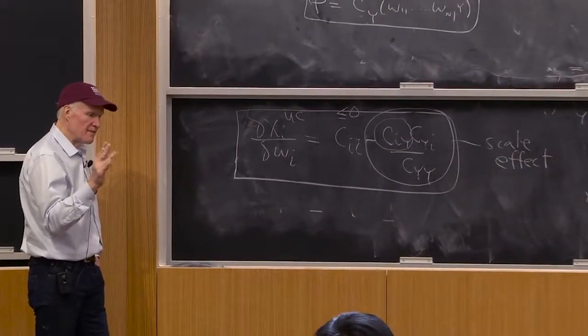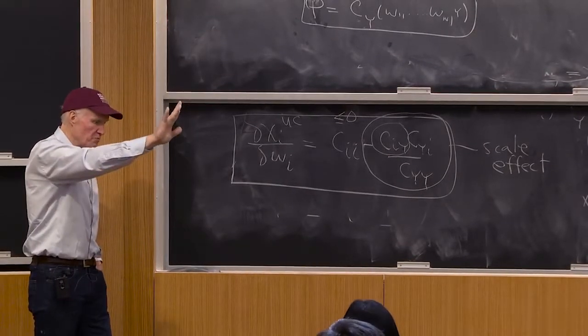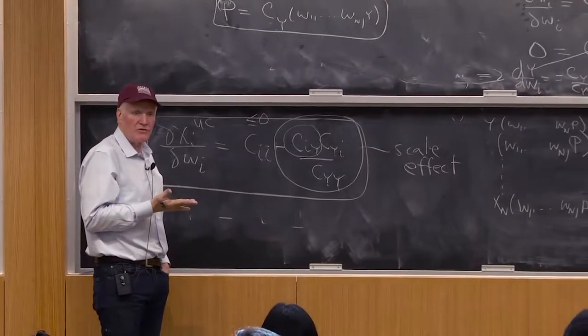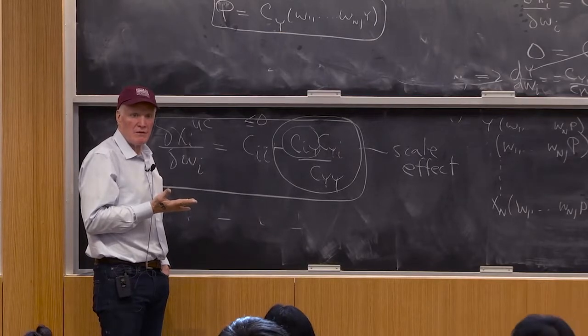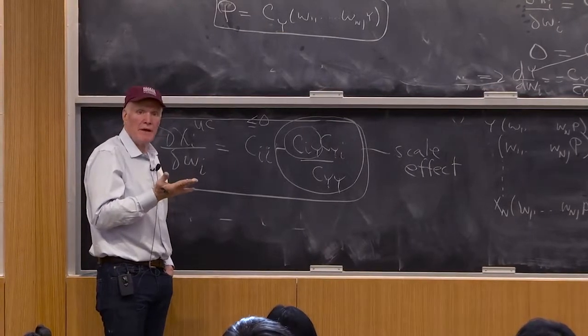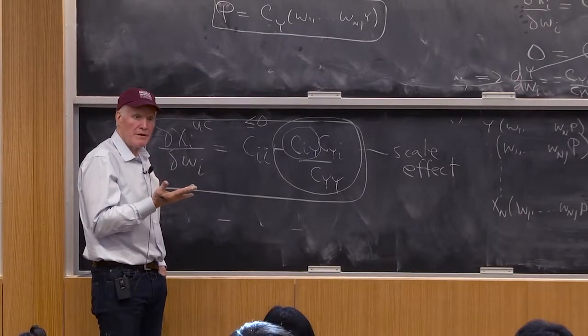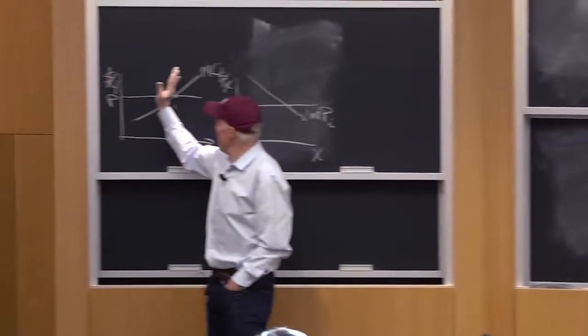Easiest case to think about is where the input's a normal input. Use more of the input as you expand output. In that case, as the price of the input rises, what happens to marginal cost? Marginal cost goes up. As marginal cost goes up, what happens to output? Output goes down, right? Marginal cost rises, output falls.